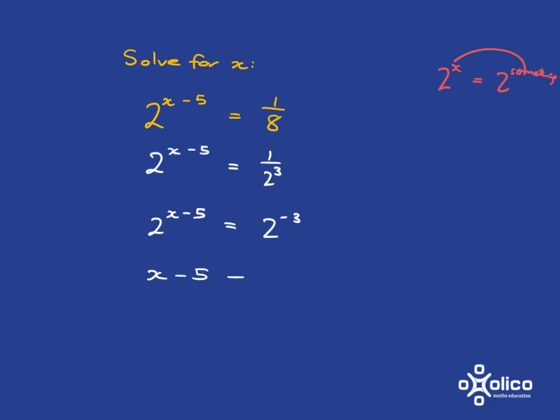Then x minus 5 must be equal to negative 3. So x will be equal to negative 3 plus 5. And that is 2.